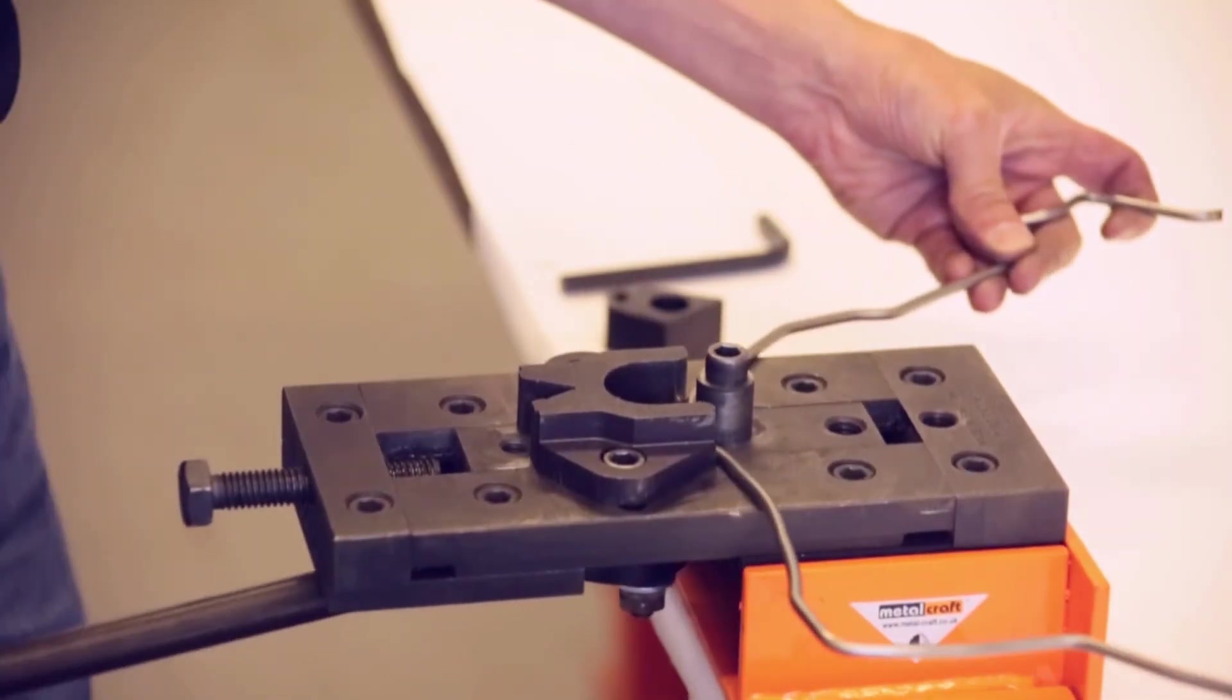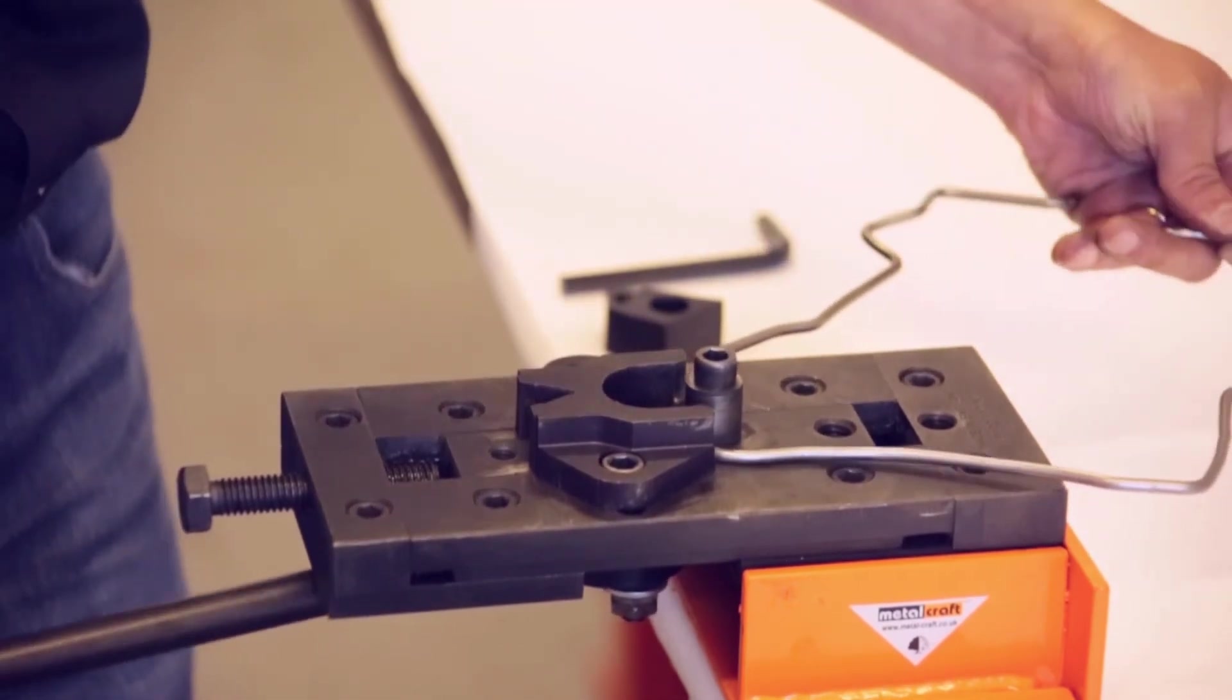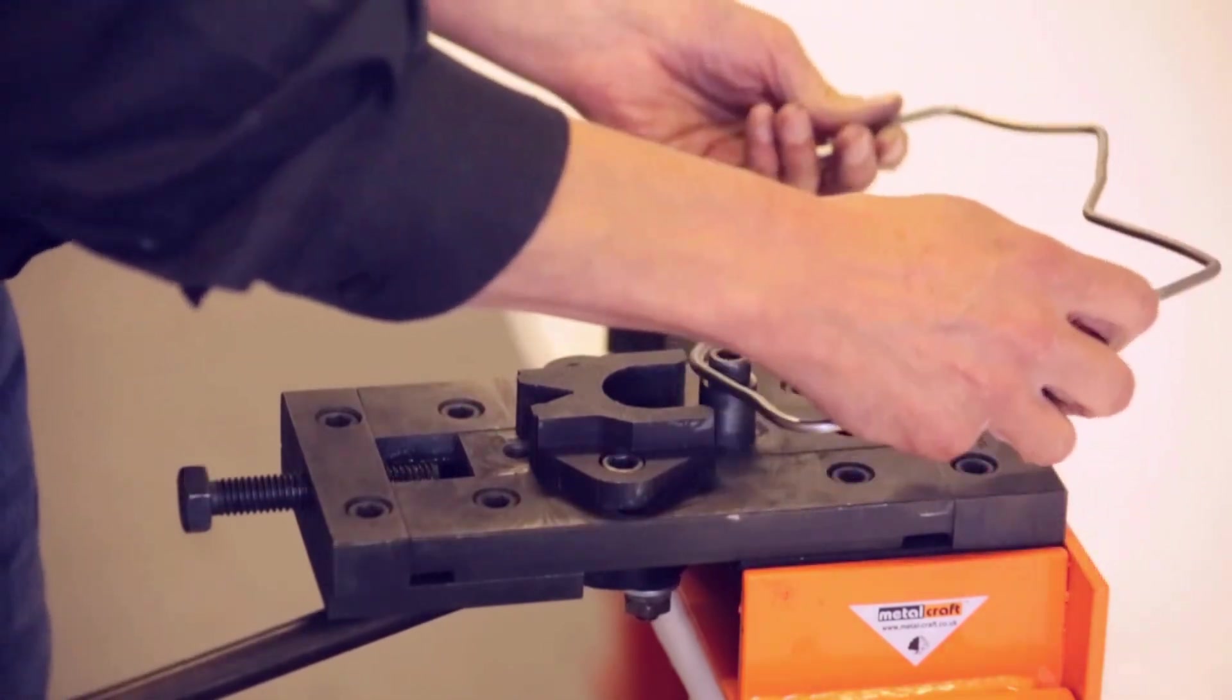You can also progressively bend strip, round or square material to any radius for free form bending and artistic steel work.